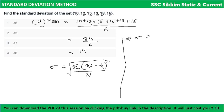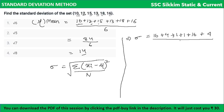So sigma equals the square root of (16 + 4 + 1 + 1 + 16 + 4) divided by 6. Summing: 16+4+1+1+16+4 = 42. So sigma = square root of 42 divided by 6 = square root of 7, which equals approximately 2.65. This is how we calculate the standard deviation.